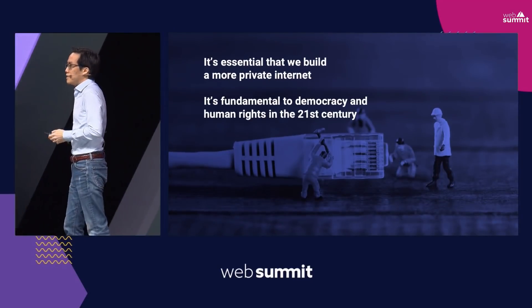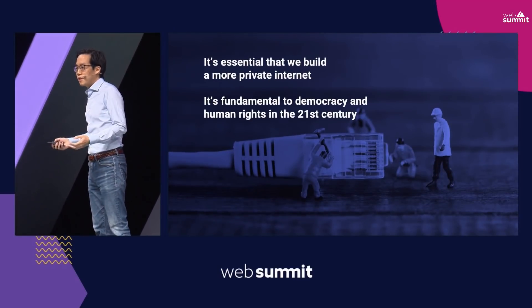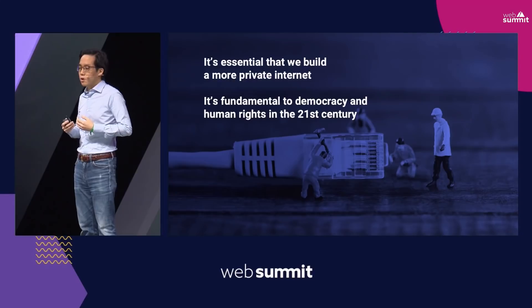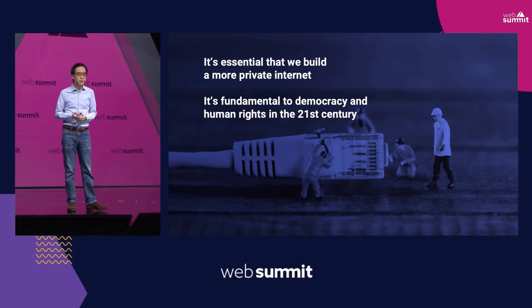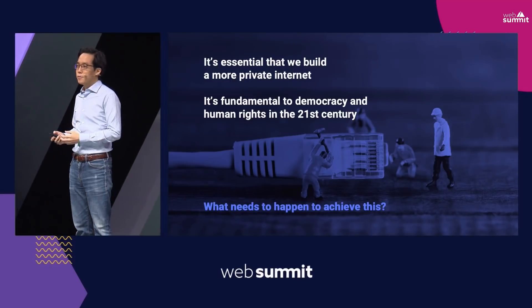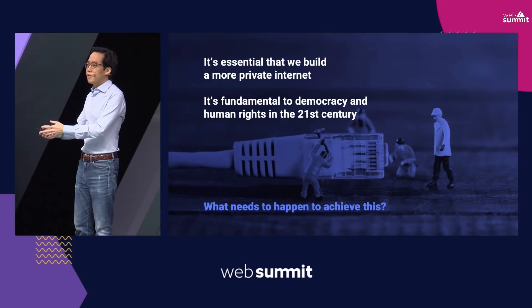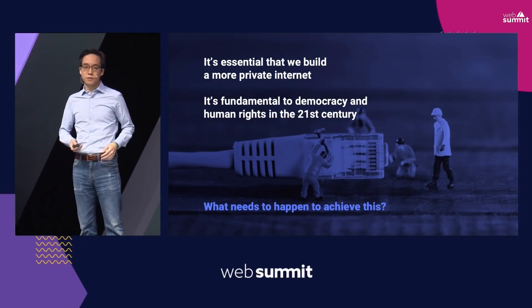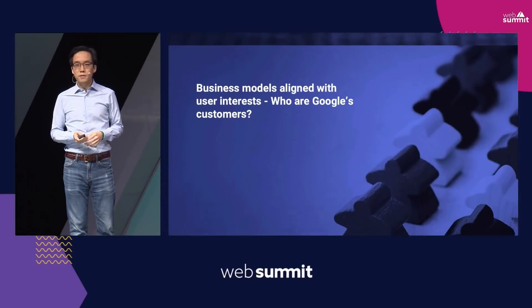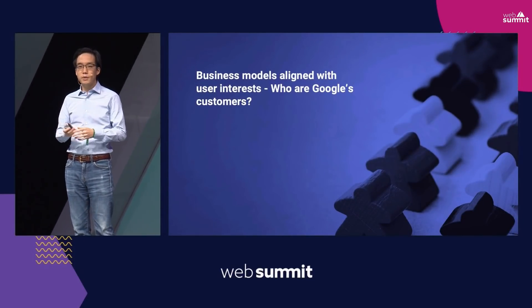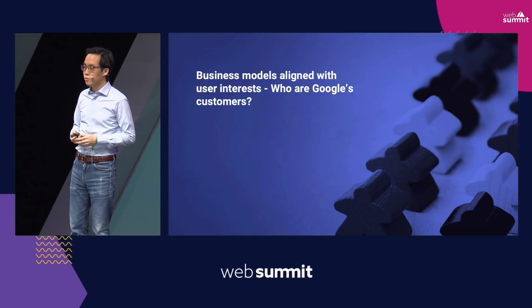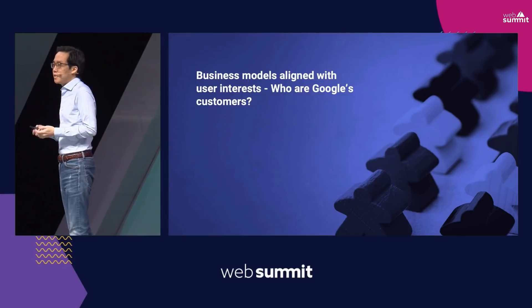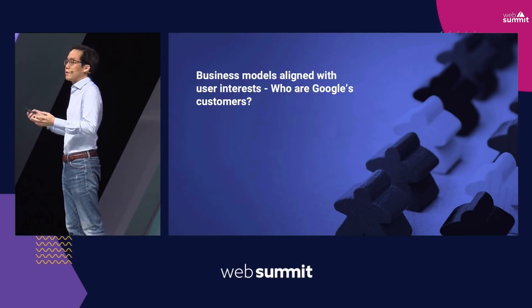So we need privacy. It's essential that we build an internet that is more private — not just for us, but also to protect democracy and fundamental human rights in the 21st century. The main question is: what do we need to do to get there? What is the path to a more private internet where privacy is the default? Well, the first step is really business model. We need to make sure the business model of the internet aligns with the best interests of consumers. A good way to understand this is to ask: who are Google's customers?